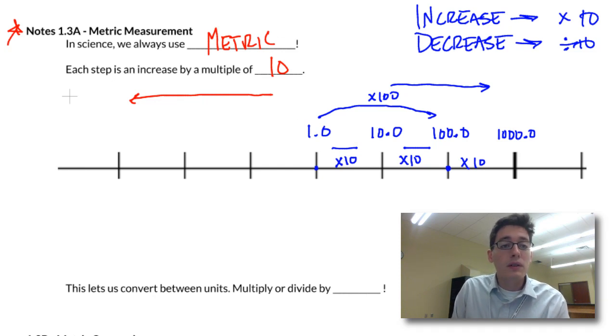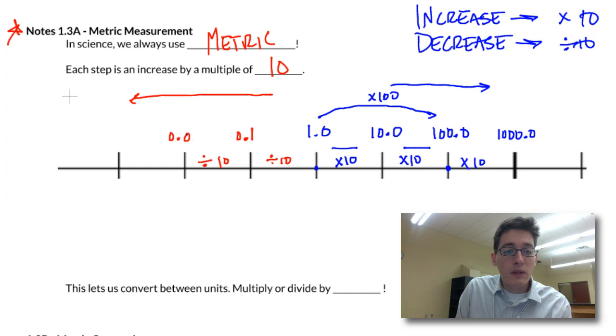It's the same exact thing going backwards. So I'll do these in red. This is dividing by 10. So if my decimal place moves to the right when I'm increasing, it's going to move to the left. So this is 0.1. If I move one more space, we are still dividing by 10. So this becomes 0.01. And then again, same thing, if I divide by 10, we go 0.001.